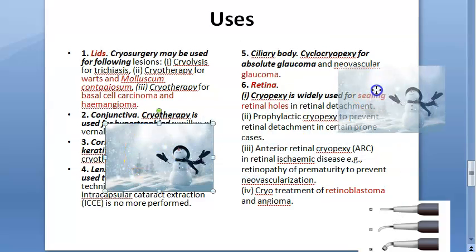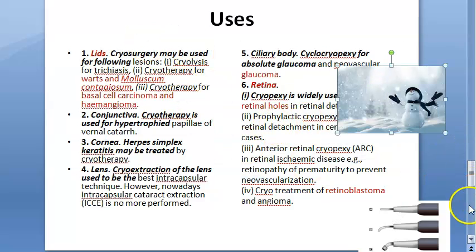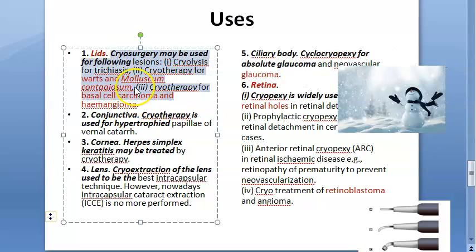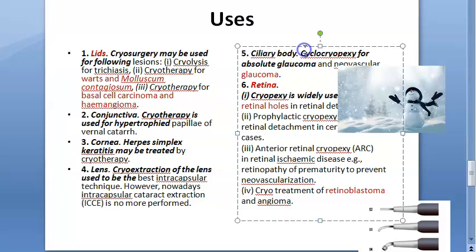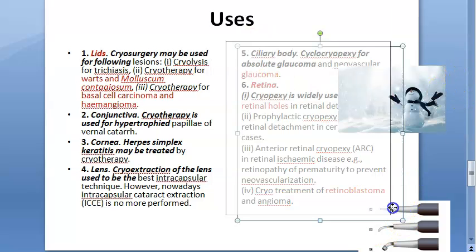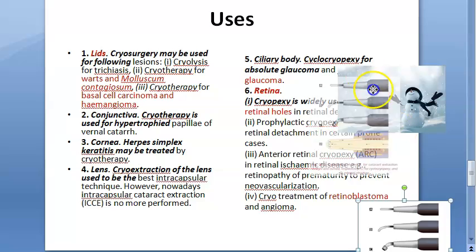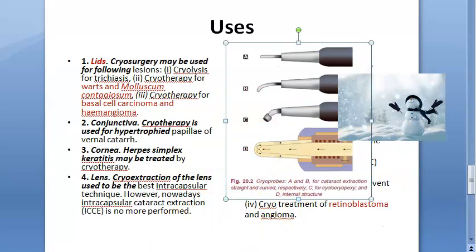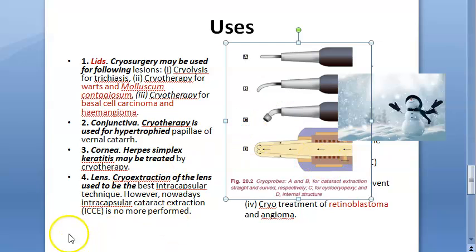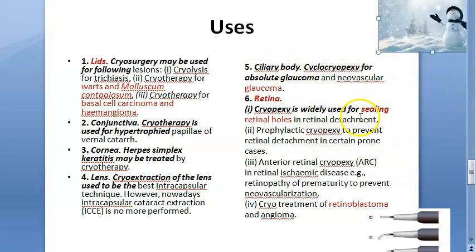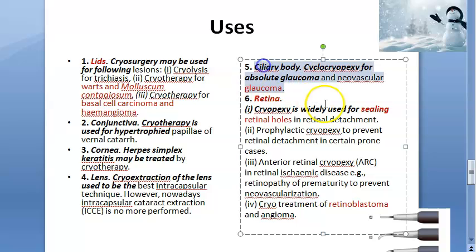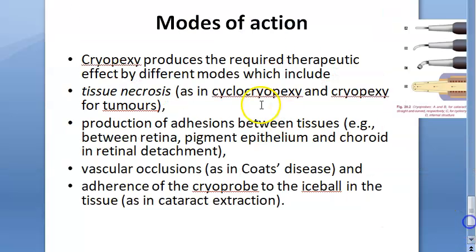To summarize the uses: cryosurgery and cryolysis are used for lid conditions, cryopexy for retinal conditions, cryo extraction for the lens, and cyclocryopexy - using the 4 millimeter probe - for the ciliary body in absolute glaucoma and neovascular glaucoma.